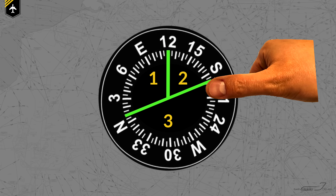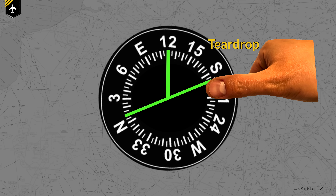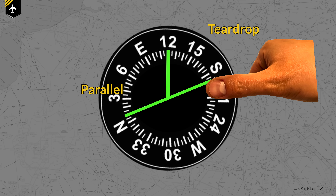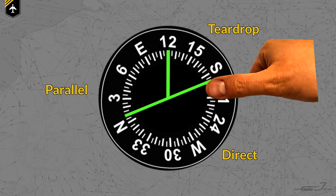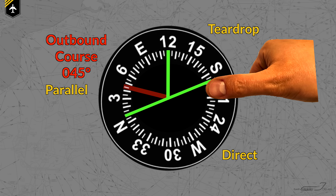Now memorize this: above your thumb is the teardrop sector, opposite your thumb is the parallel sector, and below is the direct entry sector. Once you've established that, place your outbound course — in our example, 045 — into your compass rose, check which sector it's in, and you've got your holding entry.